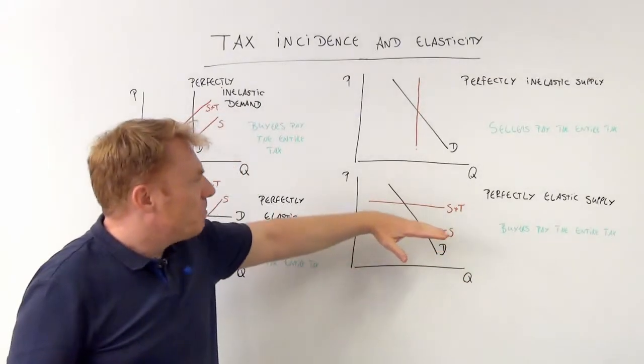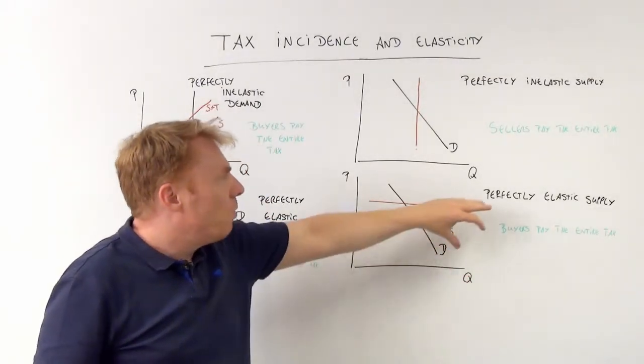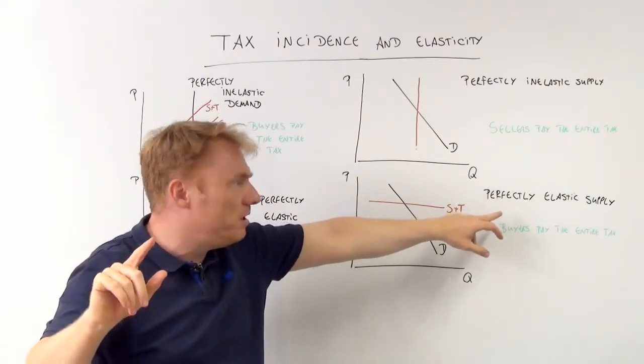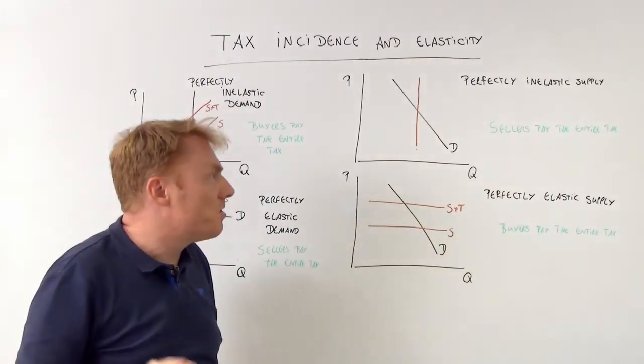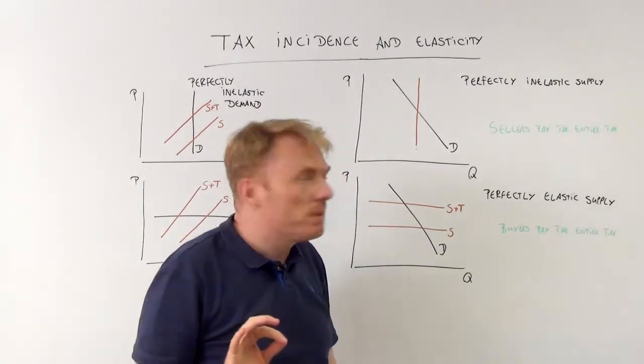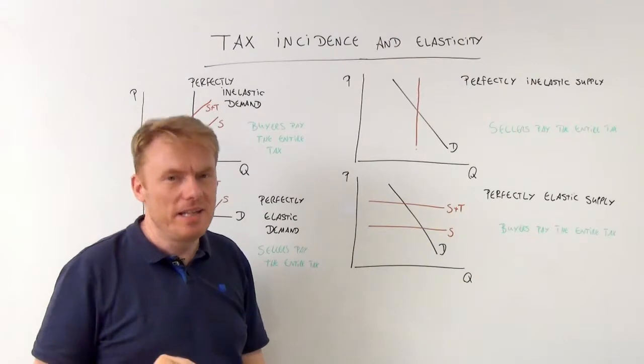Okay, so it means buyers pay the entire tax if the supply curve is perfectly elastic, and it's the sellers to pay the entire tax if the supply curve is perfectly inelastic.